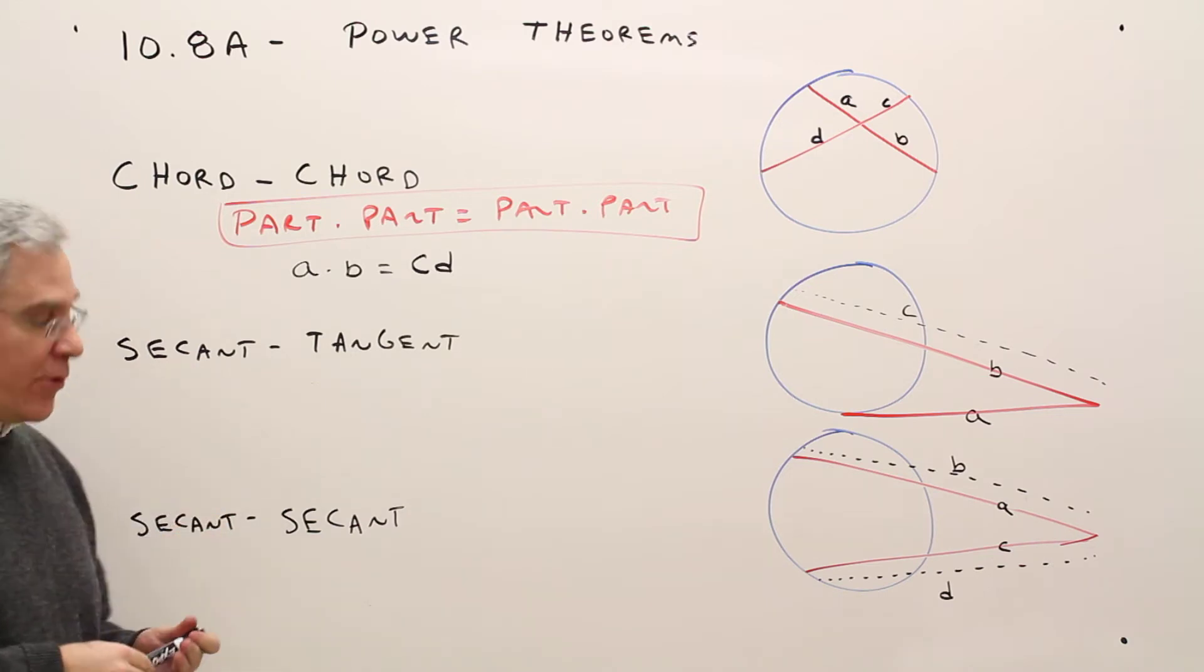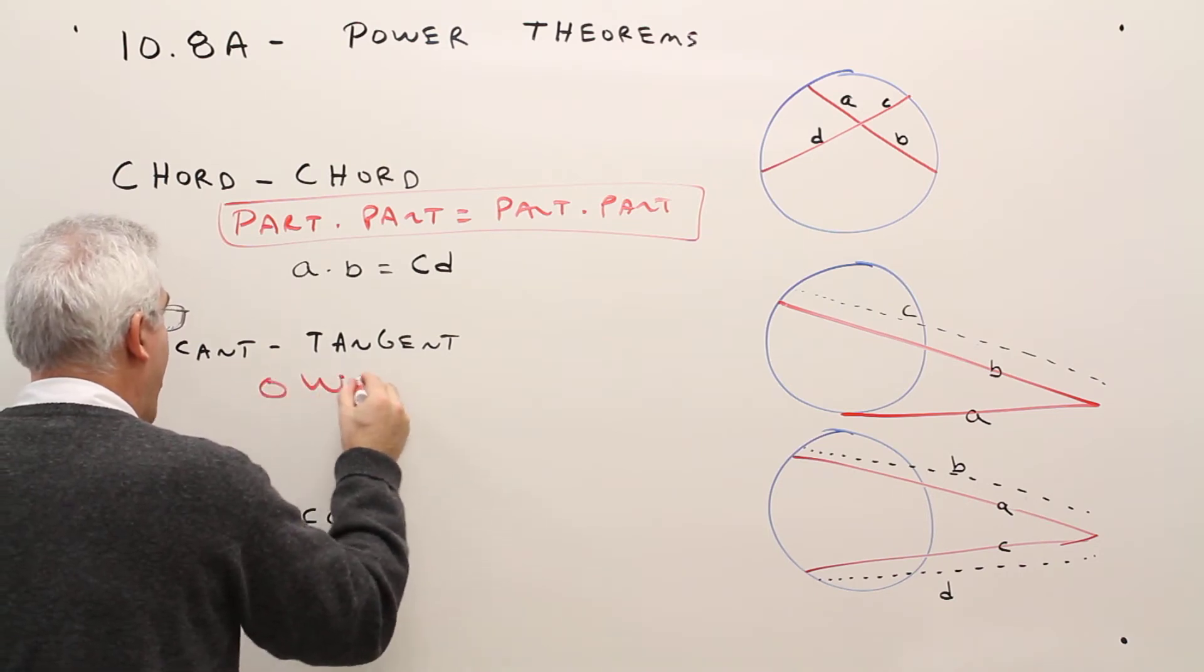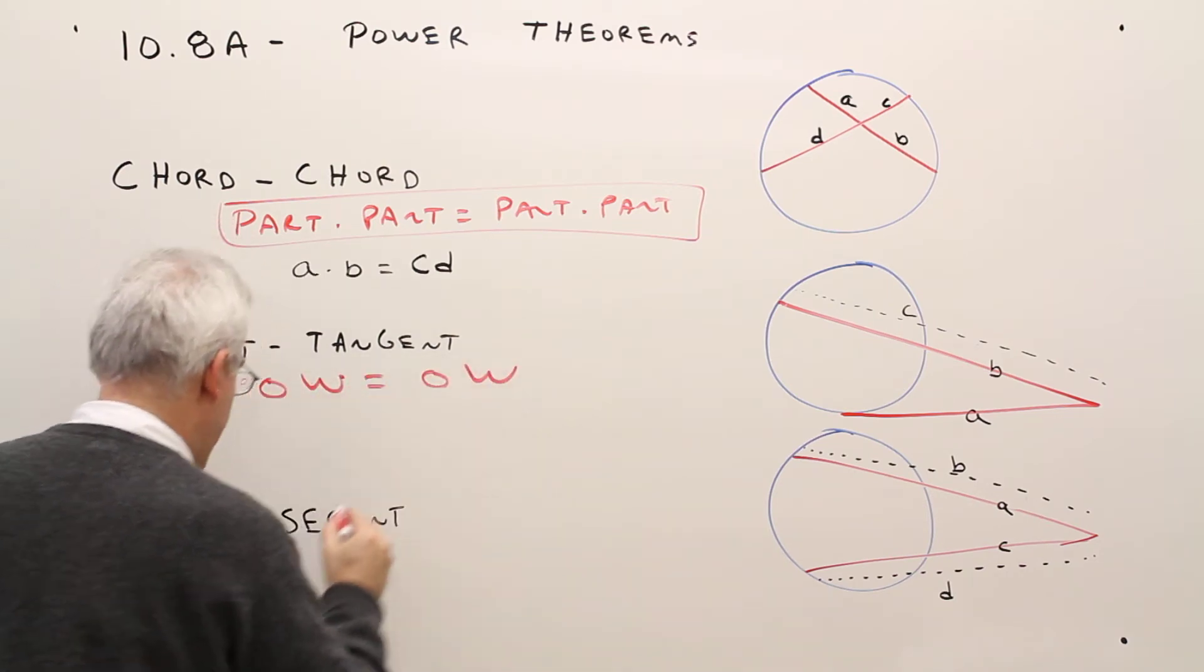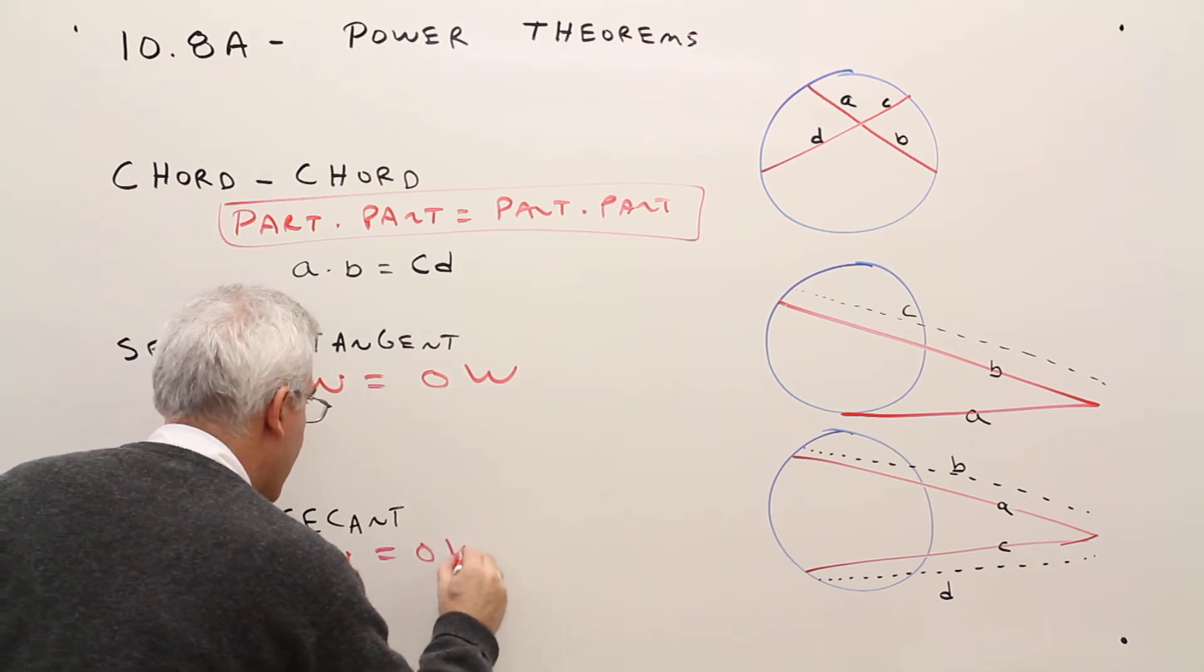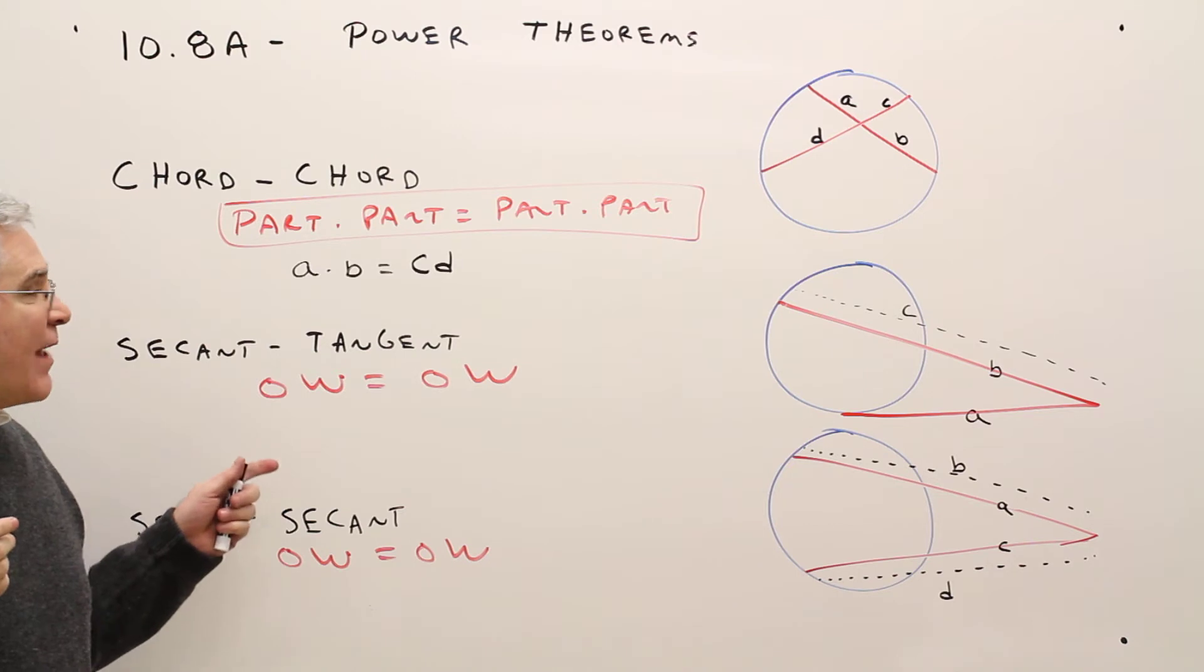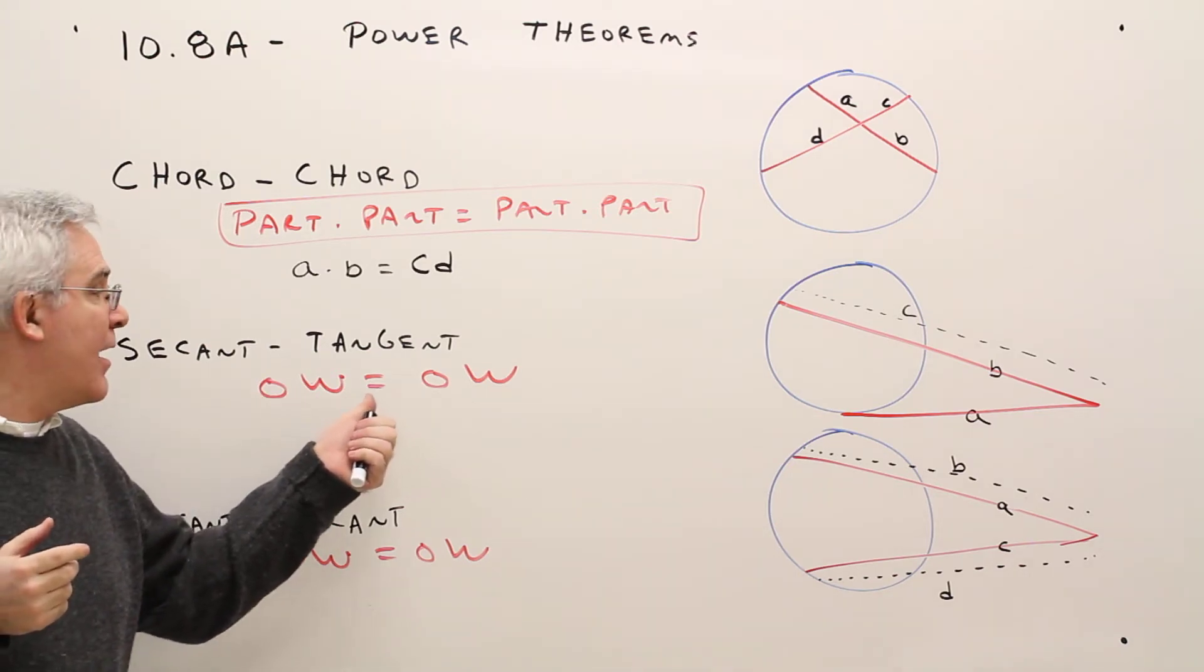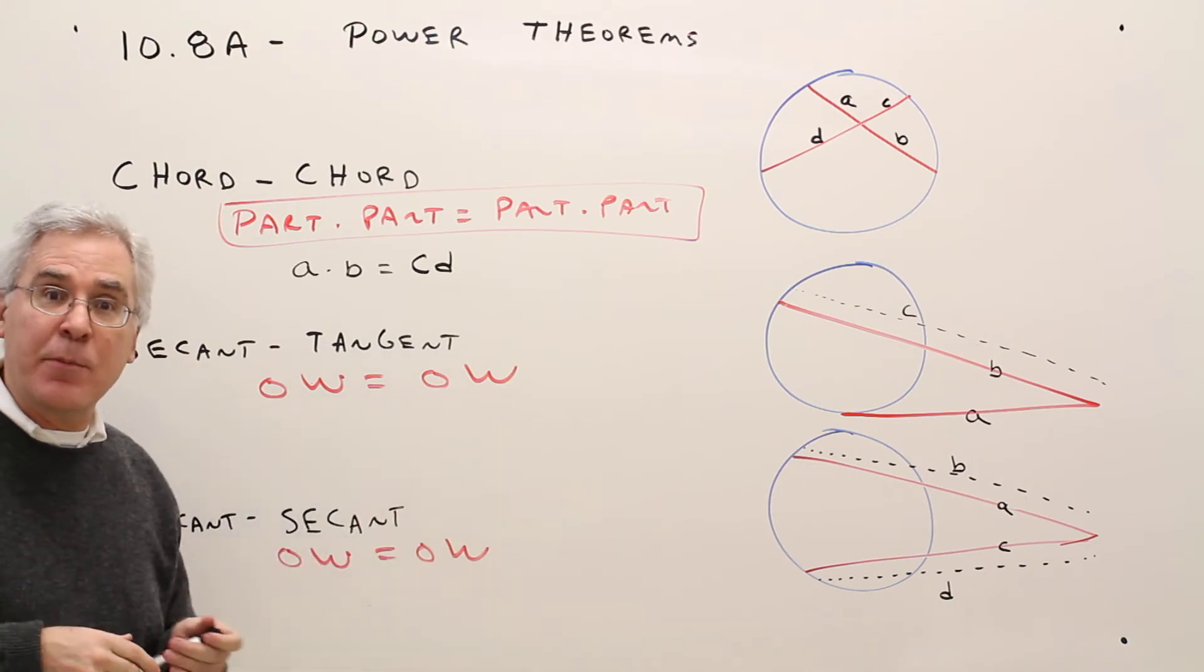These two are both easy to remember with the same memory device. It's really ow equals ow, and ow equals ow. That's easy to remember. And what does ow stand for? Outside times whole equals outside times whole.